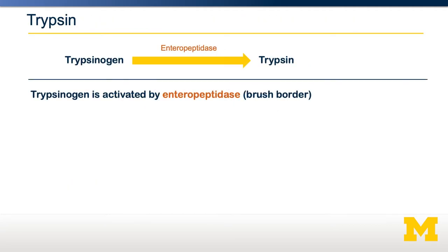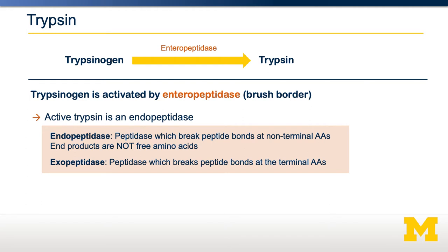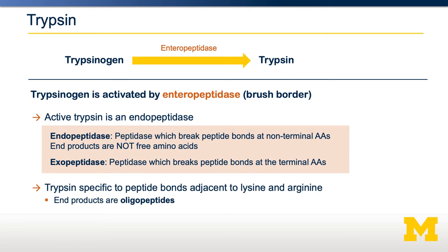Trypsin, for example, is activated by another peptidase called enteropeptidase. It is generated in an inactive form, trypsinogen, and then when it comes in contact with enteropeptidase — which is stuck on the brush border of the apical membrane of the small intestine — it becomes trypsin. Trypsin is an endopeptidase, meaning it cuts inside of a peptide bond. It doesn't cut from the ends — that would be an exopeptidase, either a carboxypeptidase or an aminopeptidase. Trypsin has specificity in that it prefers to cut adjacent to lysines and arginines, taking a long protein chain and generating a variety of oligopeptides.